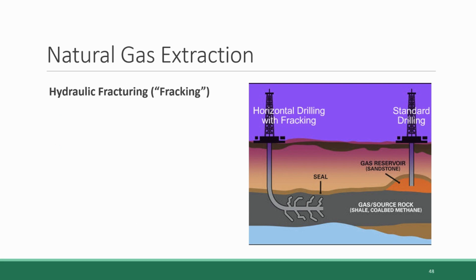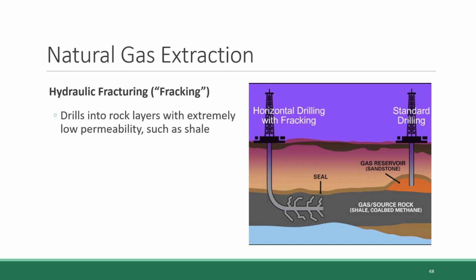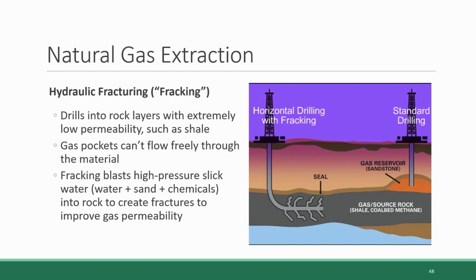But this is not the case for all rock types that form natural gas reservoirs. Hydraulic fracturing, also known as fracking, is an approach used to drill into rock layers that have an extremely low permeability but are nonetheless storing pockets of natural gas — for example, shale. Because of the low permeability, the gas pockets can't flow freely and be pumped out. So fracking blasts slick water — a mixture of water, sand, and chemical additives — into the rock at extremely high pressure, creating fractures that connect gas pockets and improve permeability so the gas can be pumped out.